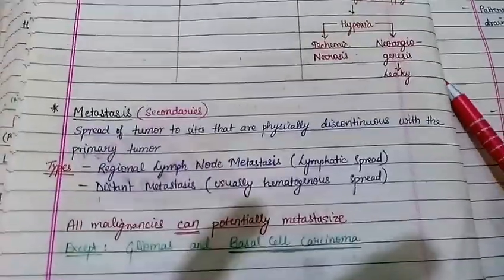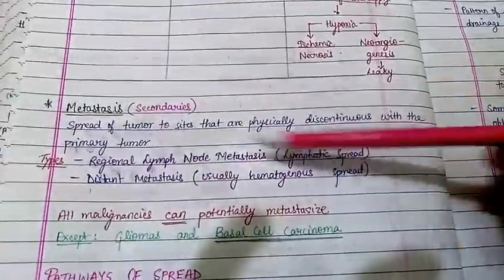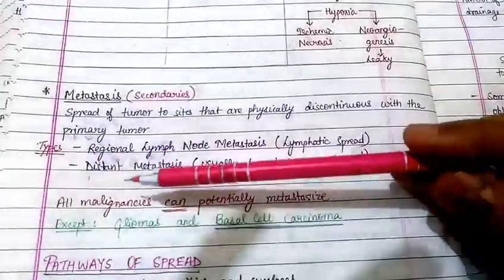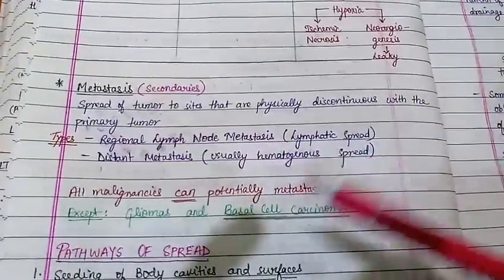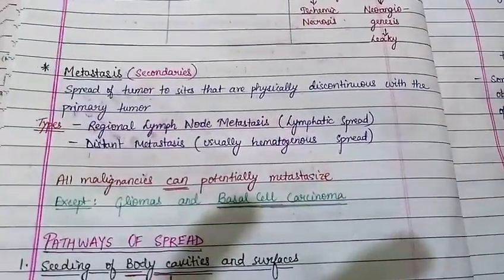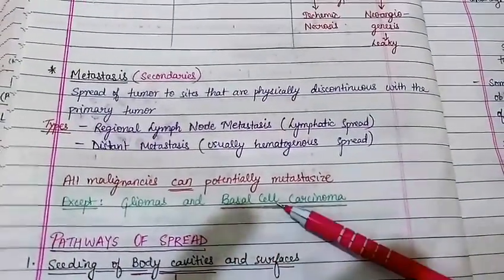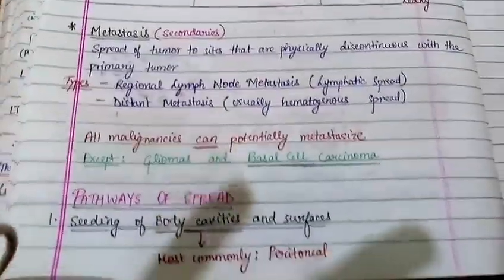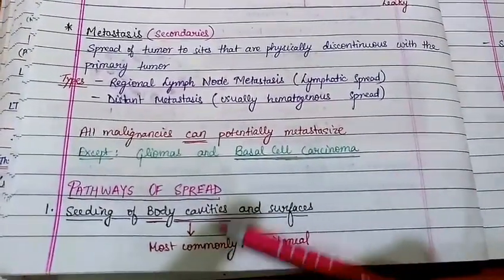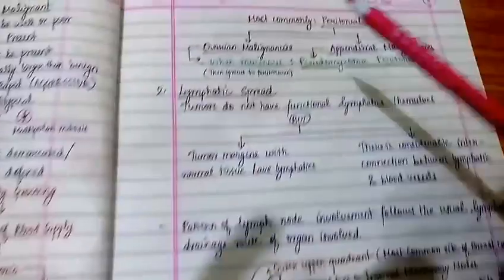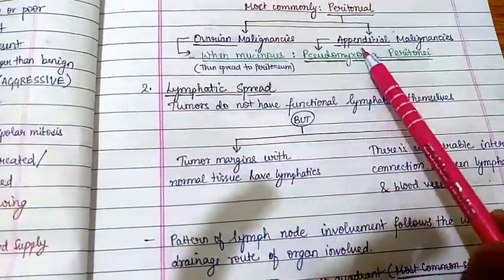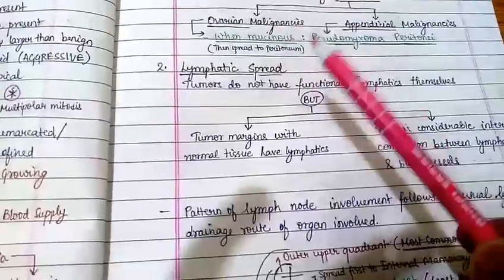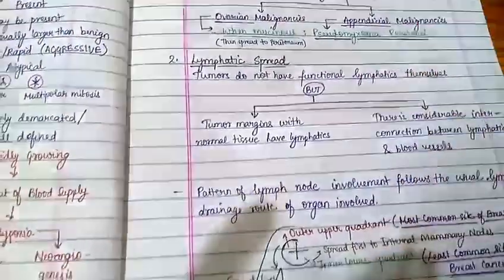Metastasis is the spread of tumor to sites physically discontinuous with the primary tumor. Types include regional lymph node metastasis (lymphatic spread) and distant metastasis (usually hematogenous, through blood vessels). All malignancies can potentially metastasize except glomus tumors and basal cell carcinoma. The first pathway is seeding of body cavities and surfaces — most commonly the peritoneal cavity. Examples are ovarian malignancy and appendiceal malignancy, which can cause pseudomyxoma peritonei.